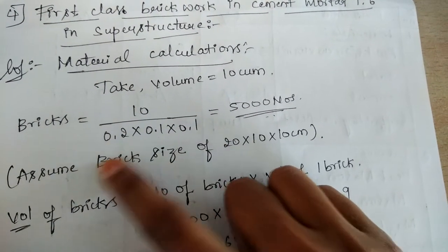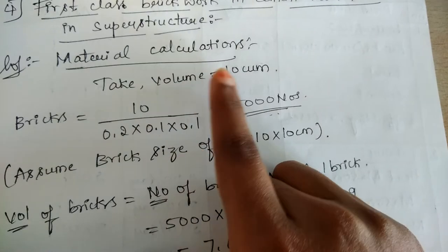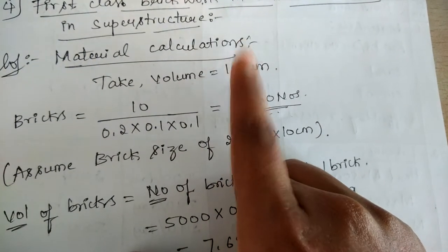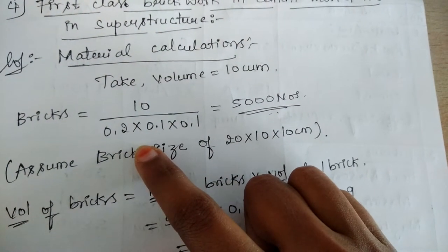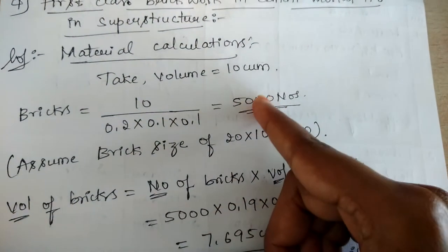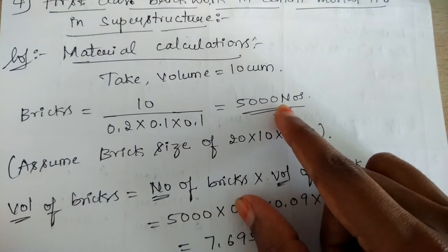This gives you the volume of one brick. On dividing the assumed volume by the volume of one brick, we will get the number of bricks, which is equal to 5000 numbers.